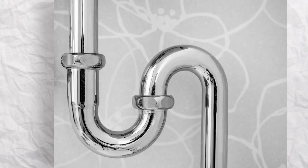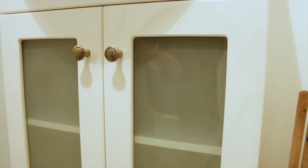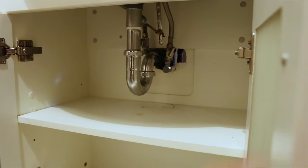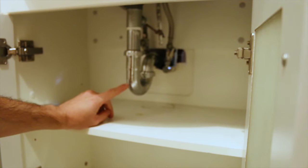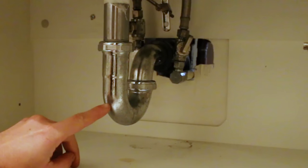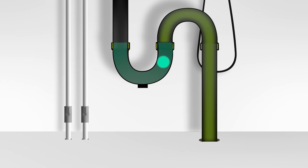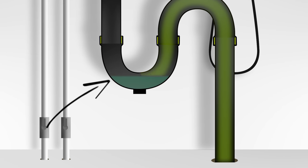And finally, installing an S-trap instead of a P-trap. All fixtures in a home have a trap. A P-trap, as seen here, is there to prevent sewage odors from coming into the house, and the S-trap does no different. However, the S-trap has a major vulnerability, which is that it could easily be siphoned out.